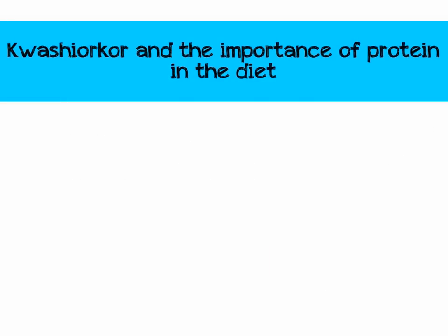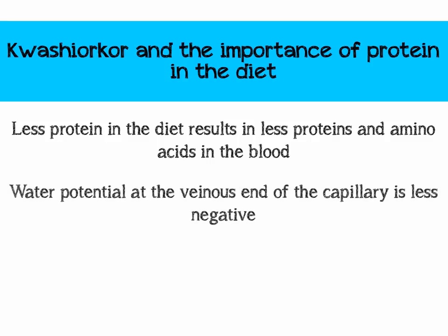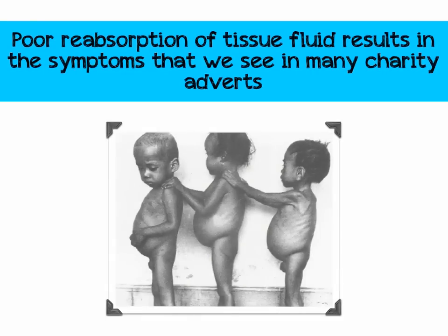We should talk about kwashiorkor, which is a malnutrition condition, and why it's important to eat lots of protein. If you have less protein in your diet, you'll have fewer amino acids in the blood, resulting in a less negative water potential at the venous end of your capillary. That means less tissue fluid is reabsorbed — instead of 95%, you might only get 80-90% reabsorbed. The result is the distended stomachs seen in many charity adverts, caused by the accumulation of tissue fluid. Watch this video a couple of times, make sure you understand how water moves by osmosis with regard to water potential, and you'll have it sorted.